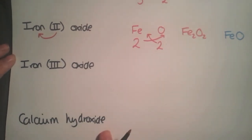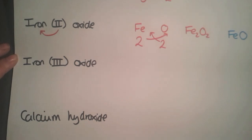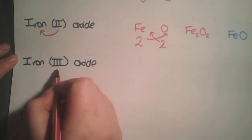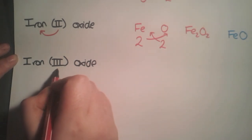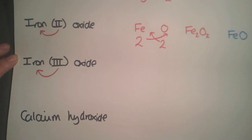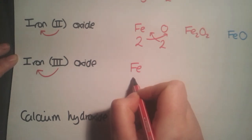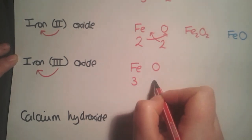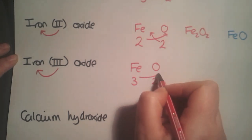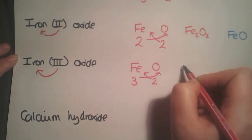Another example using Roman numerals: iron with Roman numeral III in brackets—that's the iron's valency. So Fe with valency 3, O with valency 2. Swap them over and this time we get Fe2O3.